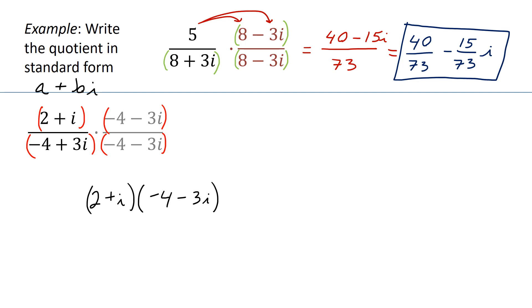If you look here, I'm going to simplify the numerator first. I'm going to multiply the binomial, distribute, simplify it, and then do the same for the denominator. Here's what I have for the numerator, and we can go ahead and write that in the numerator: negative 5 minus 10i. And now do the same for the denominator.